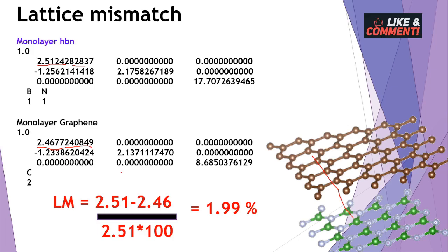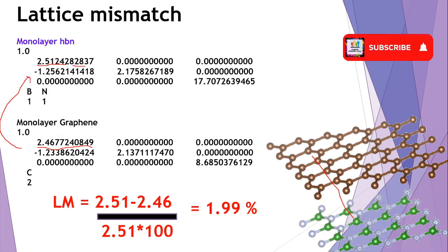You can calculate it by taking the difference between the structure you are taking as reference and the one you are pasting. Here I am doing calculations based on this. If I paste it here and create a heterostructure, we have to take these coordinates, paste them, write carbon here, then write two, and paste those coordinates. I have already shown this in my videos. The lattice mismatch is around 1.99 percent.